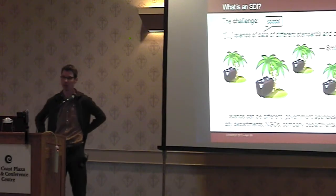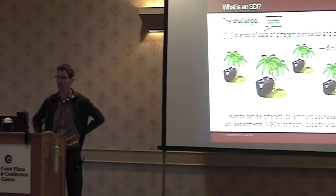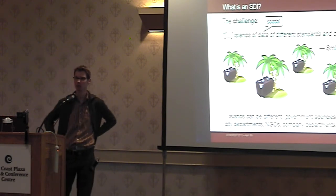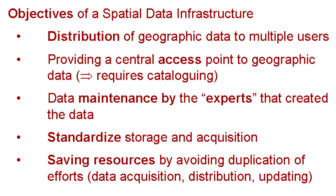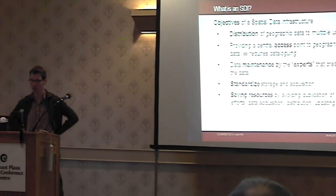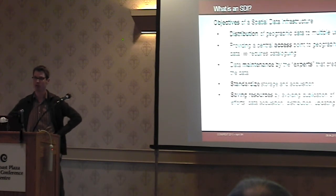Why do we have spatial data infrastructures? We have islands of data of different standards and quality, particularly spatial data. These islands are different government agencies or different city departments — the traffic department, the department responsible for green spaces. They collect data but should also bring them together, as the data may be needed by other departments. It can also be NGOs or company departments. The objective is basically just the distribution of geographic data to multiple users, and providing a central access point to geographic data — a place where you can search and find what you want.